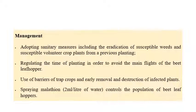For management of beet curly top, sanitation is required along with destruction and removal of weeds. Regulating the planting time to avoid the main flight periods of the beet leafhopper is important. Border crops can help reduce effective transfer of the leafhopper. Insect traps can also be used. As a chemical option, spraying of Malathion at 2 ml per liter of water can effectively control the beet leafhopper.